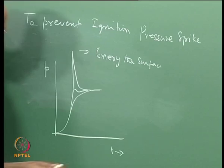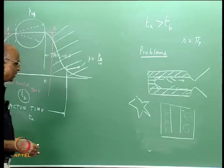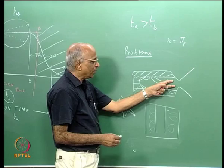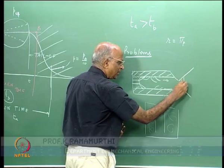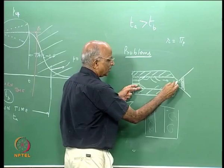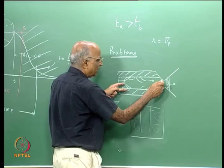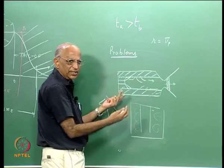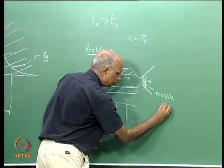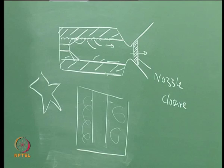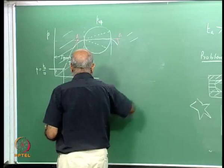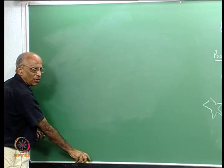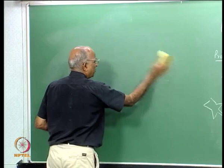Something I missed mentioning about igniters: when we ignite a motor — especially one that must ignite in vacuum — we fit a nozzle closure over the nozzle exit. This keeps the cavity enclosed so pressure builds up to around 5–6 bar before the closure is expelled and the motor is fully ignited. This is known as a nozzle closure.